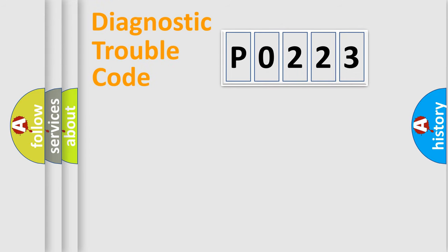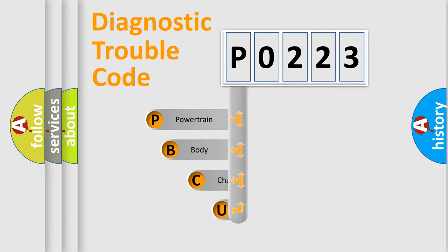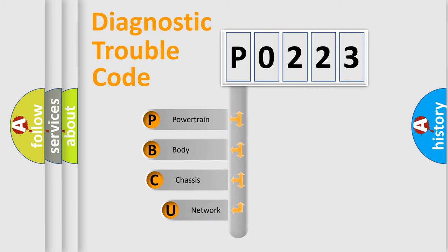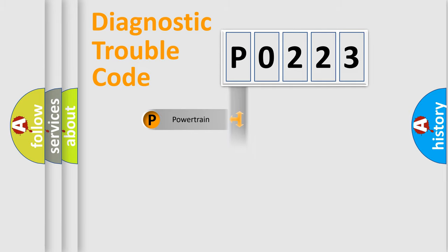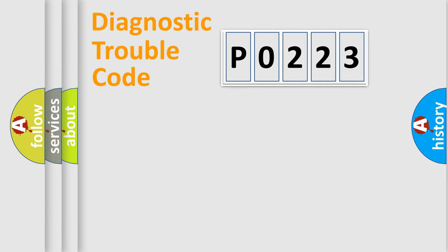Let's do this. First, let's look at the history of diagnostic fault code composition according to the OBD2 protocol, which is unified for all automakers since 2000. We divide the electric system of an automobile into four basic units: Powertrain, Body, Chassis, Network.